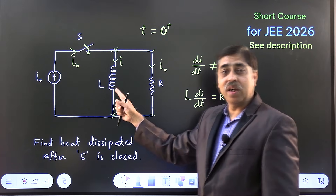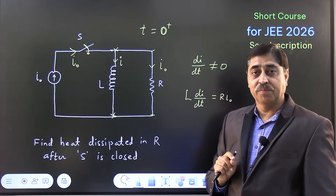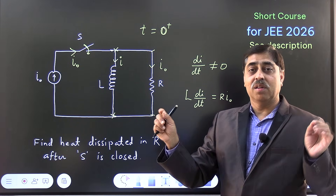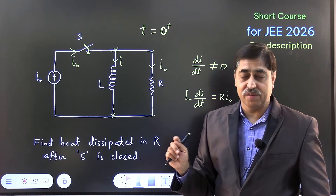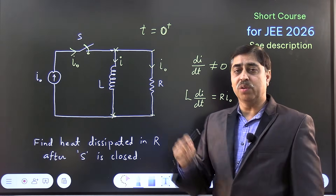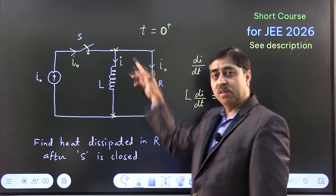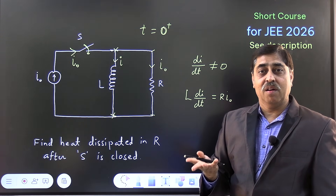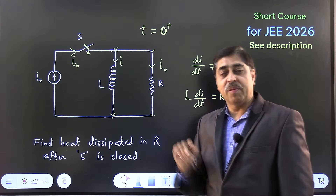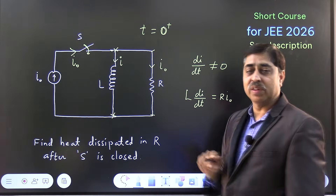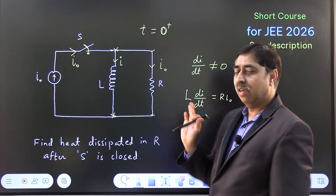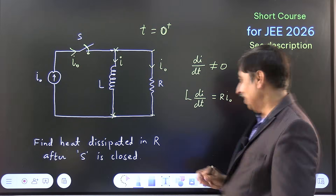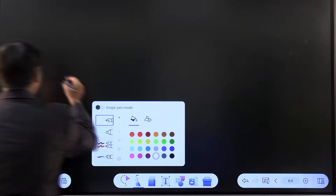The current goes on increasing in the inductor until it attains a value of I₀. When the current becomes I₀ in the inductor, the current becomes 0 in the resistor. So the question asks for the heat dissipated in R — there is a fixed amount of heat that will be dissipated. The current through R starts from I₀ and goes to 0. Once the current in the inductor is I₀, there is no current through the resistor, no EMF, no potential difference — everything reaches steady state.